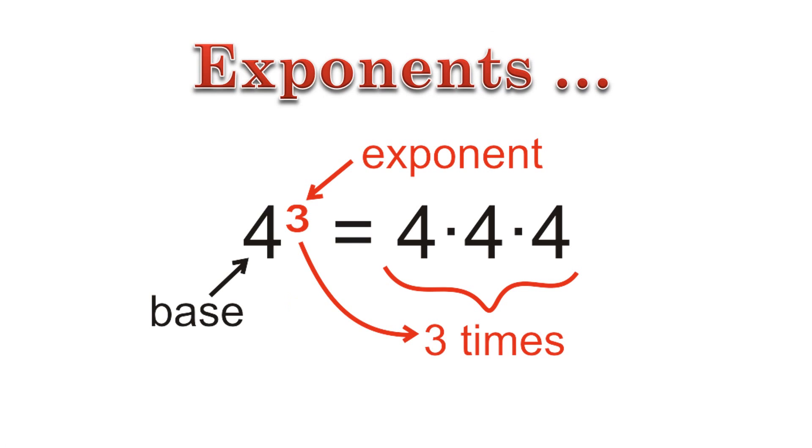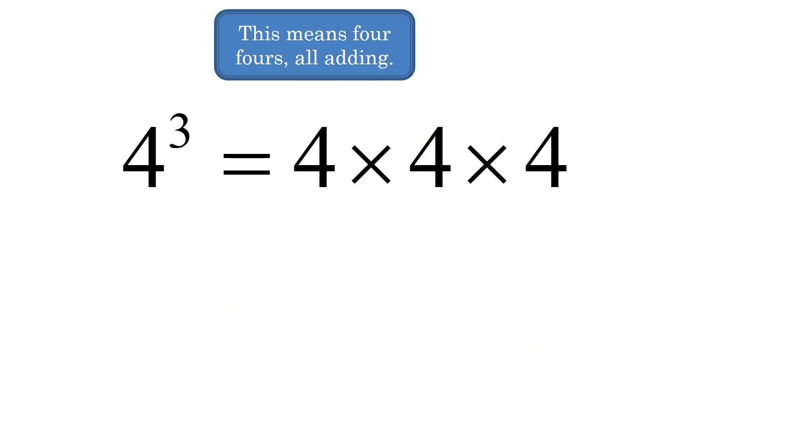Okay, now, exponents are repeated multiplication. But the thing is, you are multiplying by the same number every single time. Just like three times five, you're adding five three times. Well, this is four cubed. So, let's take a look at this to see if we can unpack it.